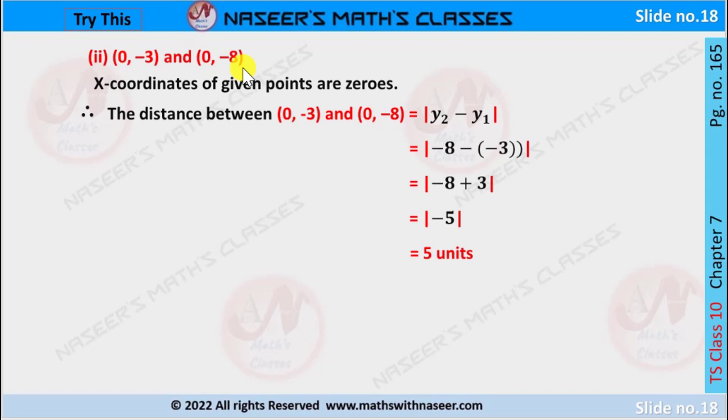Now we have to find the distance between (0, -3) and (0, -8). Here x-coordinates are 0, so the distance between (0, -3) and (0, -8) is given by |y₂ - y₁|. Now we substitute: y₂ equals -8 and y₁ equals -3. Then we get |-8 - (-3)|. Minus into minus becomes plus, so we can write -8 plus 3.